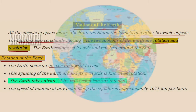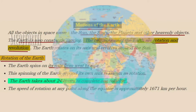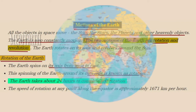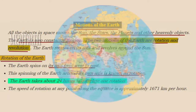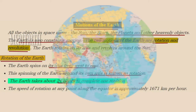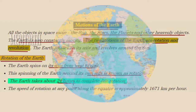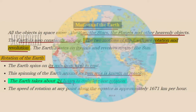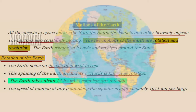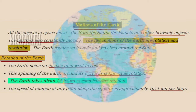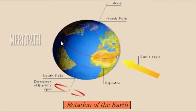Rotation of the earth means earth spins or rotates from west to east direction. This spinning of the earth on its own axis from west to east is known as rotation. The time period taken to complete one rotation is 24 hours, and the speed of rotation is 1671 kilometers per hour. In this image, you can see the earth rotating around its own axis, with the equator in the middle, the north pole at the top, and the south pole at the bottom.